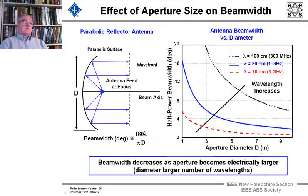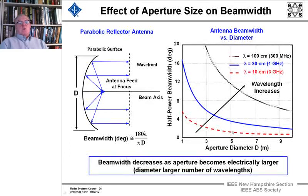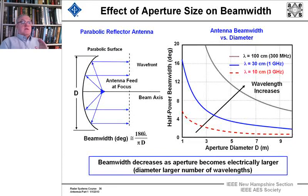Now let's look at how the half power beam width changes as a function of aperture diameter as we again change the wavelength. Starting with wavelengths of 10 cm, 30 cm, and 100 cm, the half power beam width gets greater and greater as wavelength increases. Beam width is inversely proportional to the diameter and proportional to the wavelength, so beam width decreases as the aperture becomes electrically larger — that is, as the diameter becomes a larger number of wavelengths.